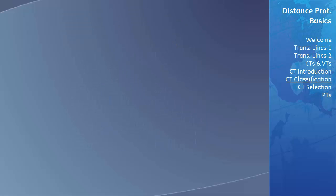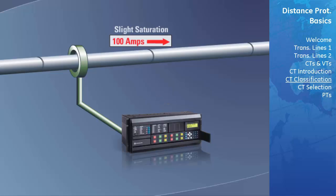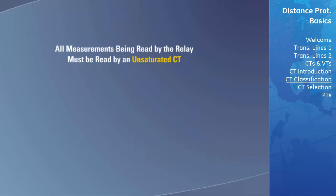To demonstrate how a relay measures a saturated CT: if 100 amps are passed through the CT primary under no saturation, then 100 amps is read by the relay. If those 100 amps cause slight saturation, the relay's measurement decreases and instead reads only 50 amps. If the 100 amps cause severe saturation, the relay reads only 25 amps. The greater the saturation, the more inaccurate the measurements will be. It is imperative that all measurements read by the relay are from an unsaturated CT, so appropriate CT selection must be made to ensure the rated CT can handle the applied current without saturating.